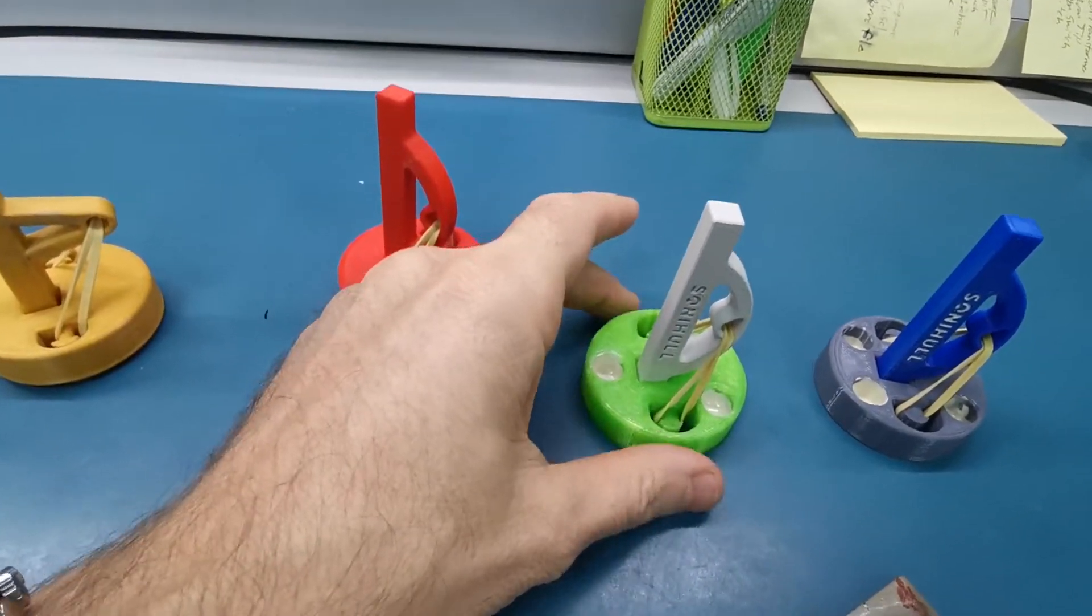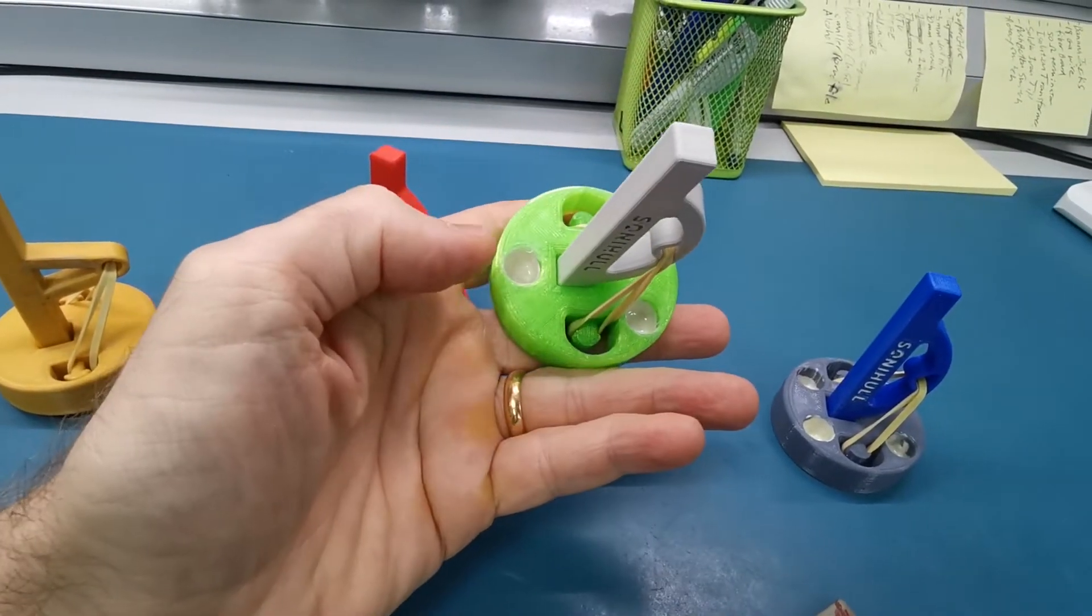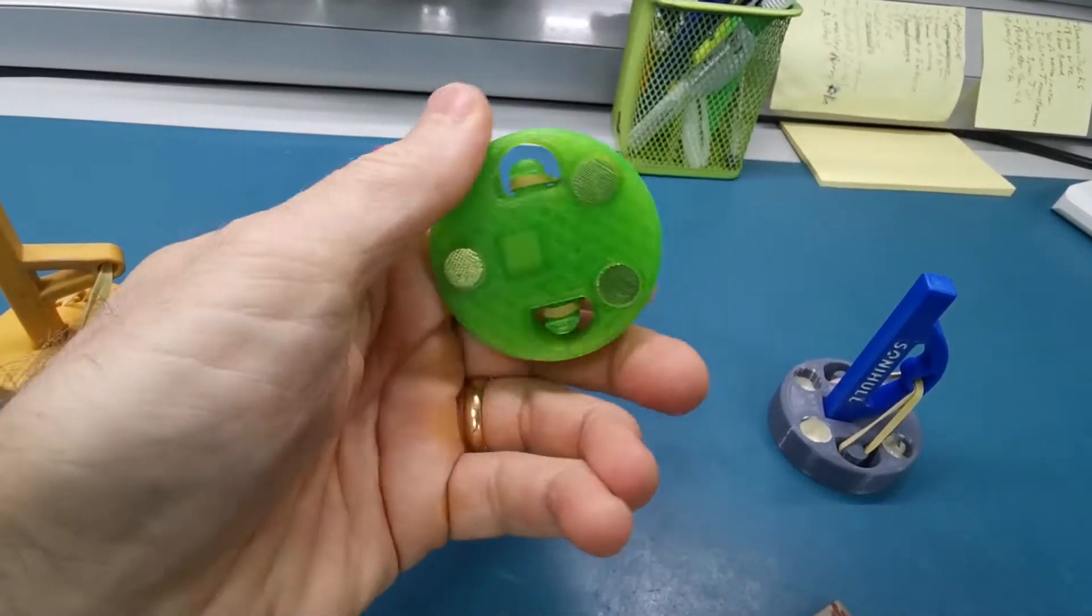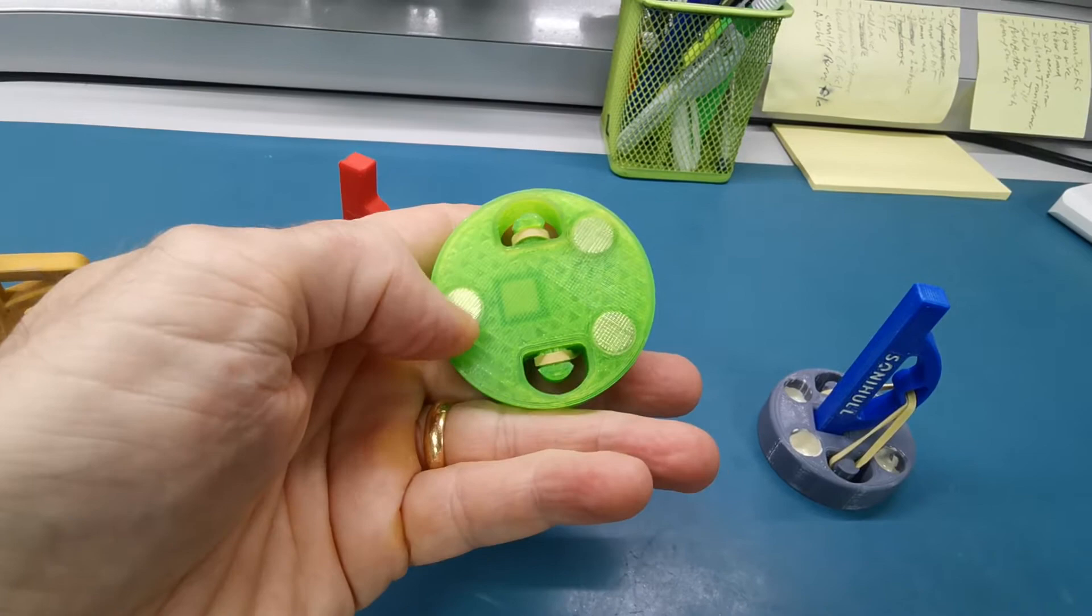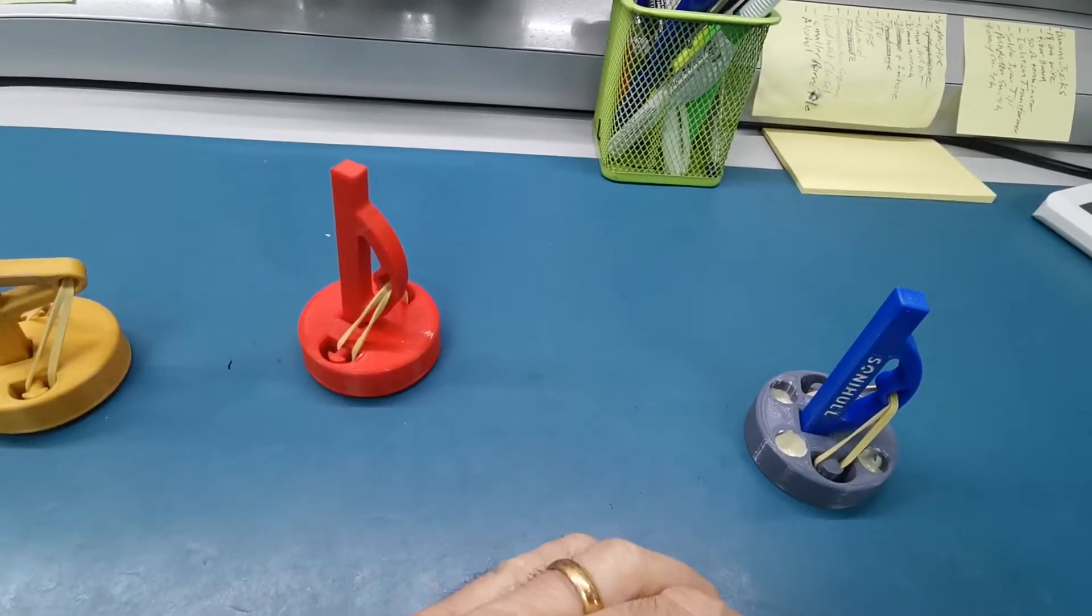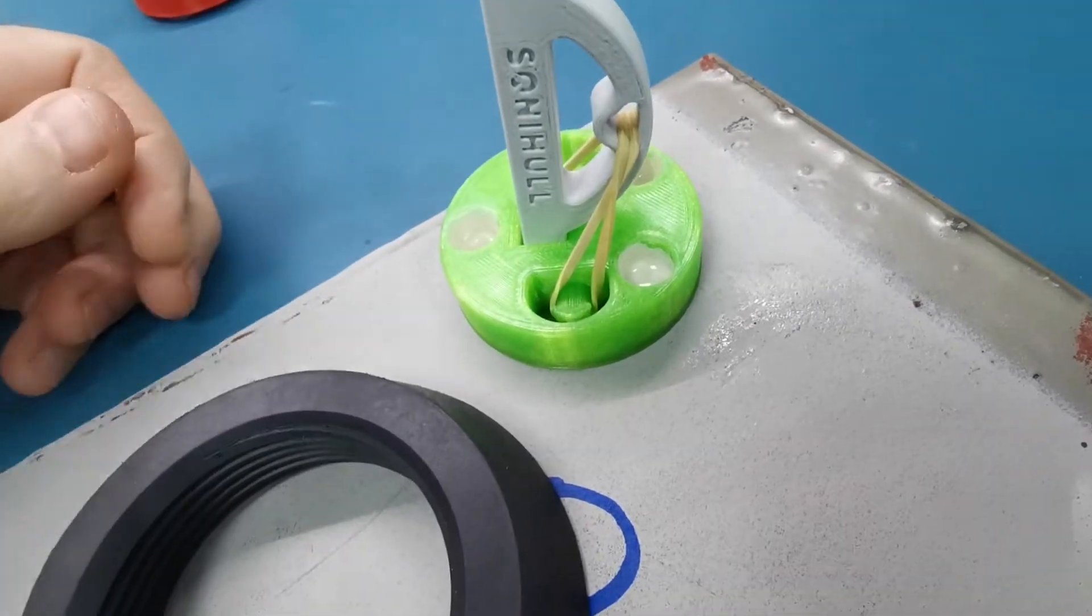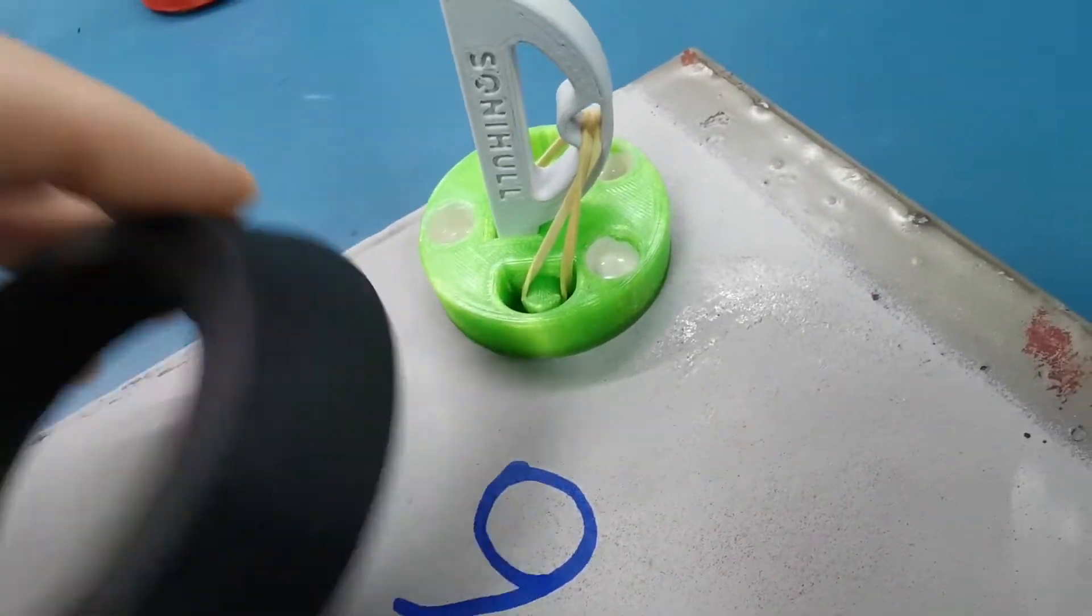So I recessed the magnets into the base and you can see they're very close to the bottom there to the surface. So now the base sits flat on the surface and glue cannot get underneath it.